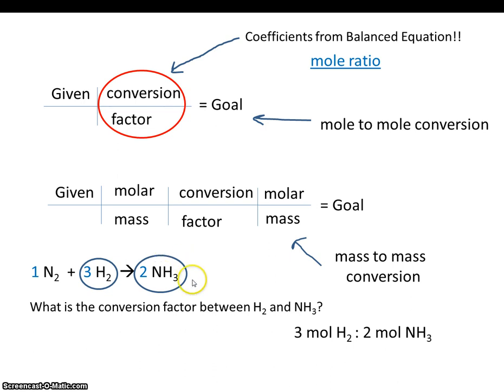So if we want to make two moles of NH3, we have to react three moles of H2. If we wanted to make four moles of product, we would need six moles of reactant. But either way, the ratio is two to three.